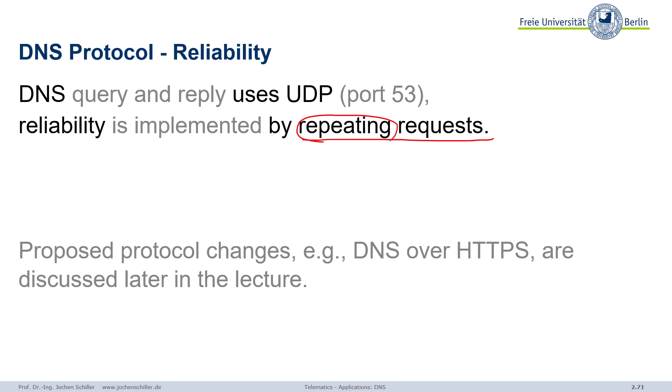There are some more versions: DNS over HTTPS later in this lecture, and also how to secure DNS later. So the simple scheme is: use UDP, use port 53 — a well-known port — send your query, get the reply. And if you lose a request, simply repeat it. That helps for reliability.